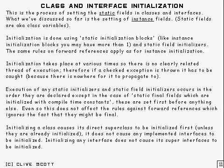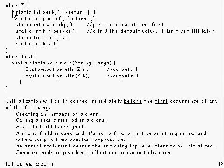I think we'd better see an example. Here's an example to illustrate what's going on. This class said here has got two static methods in it. One returns the value of j and the other returns the value of k.